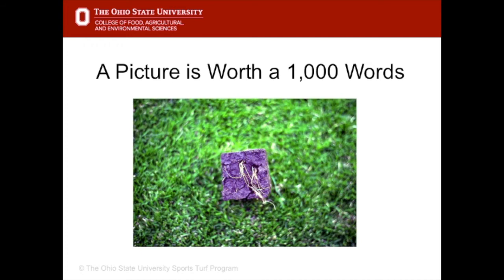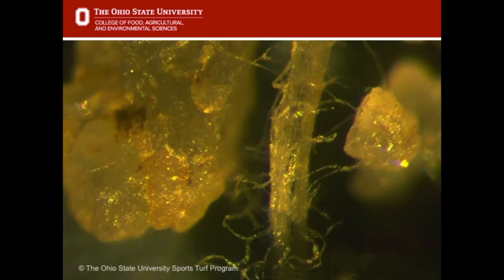Benefits to coring include improved turfgrass growth around the core holes as shown here. This picture shows the root with root hairs next to particles of sand. The root hairs are responsible for 90% of the absorption, and so any management practices done to improve root growth and root hair development cannot be underestimated.